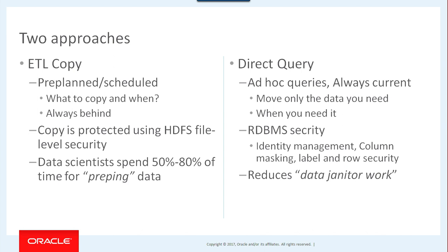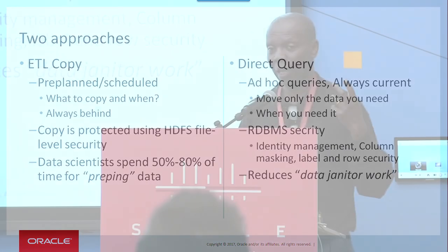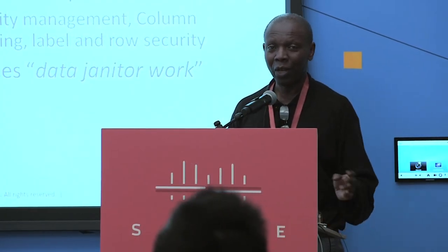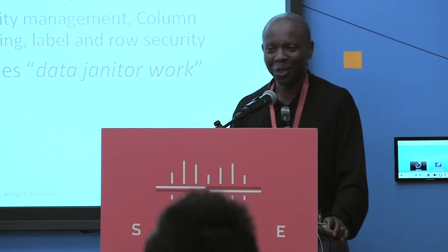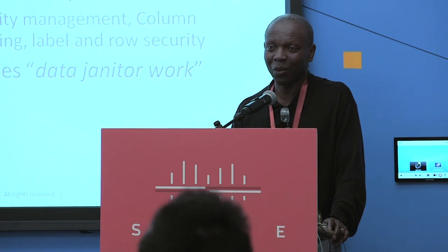Well, you have two approaches. You can copy over from the RDBMS — since it's a smaller data set compared to big data — so you copy the RDBMS data over to Spark so you can do all the joins locally. But the problem is data keeps moving; the master data keeps changing. When you copy, it may already be behind and you need to repeat the operation. I've met customers who do that every hour, copying hundreds of megabytes or gigabytes of data. So that's not really practical.